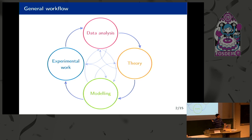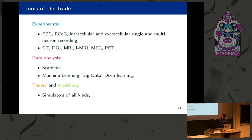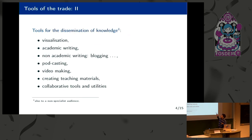Most of this work nowadays is conducted through the use of computer software and tools. For experimental work, we have EEG monitoring, CT machines, and MRI. For data analysis, we have statistical machine learning libraries like NumPy and SciPy — Python libraries. And then we have theory and modeling software, all kinds of simulators. We also need software for visualization, academic writing like LaTeX, non-academic writing like blogging, and audio-visual software for podcasting.